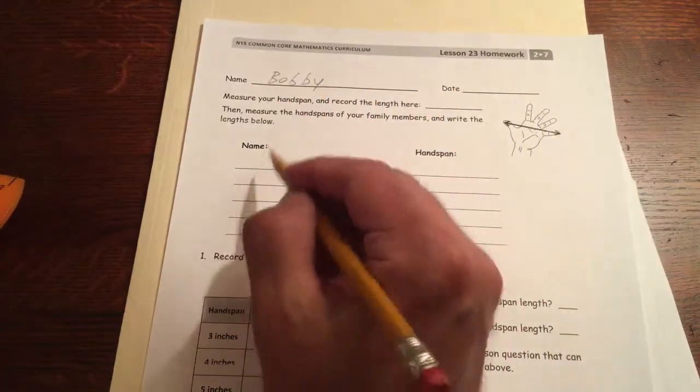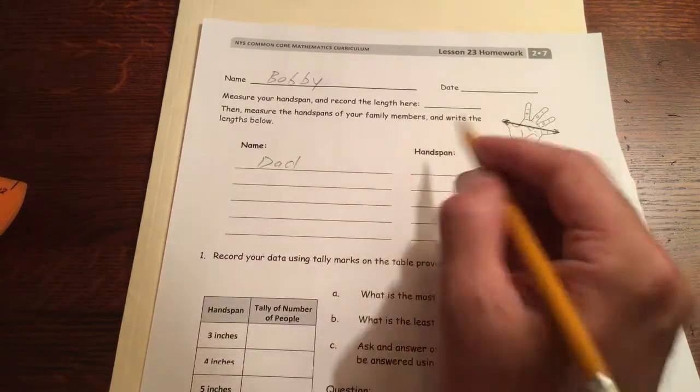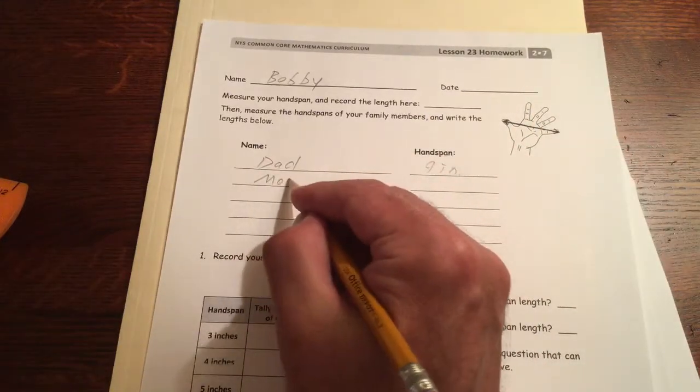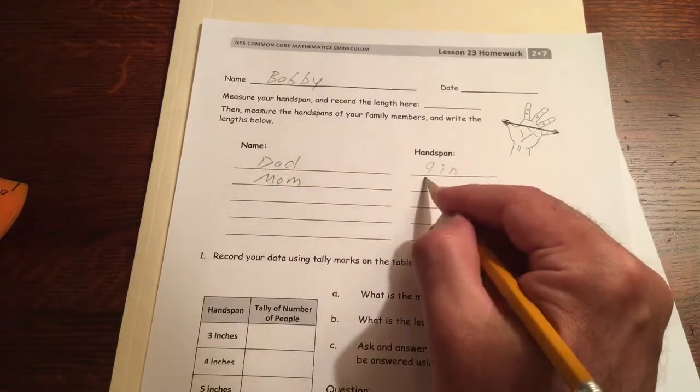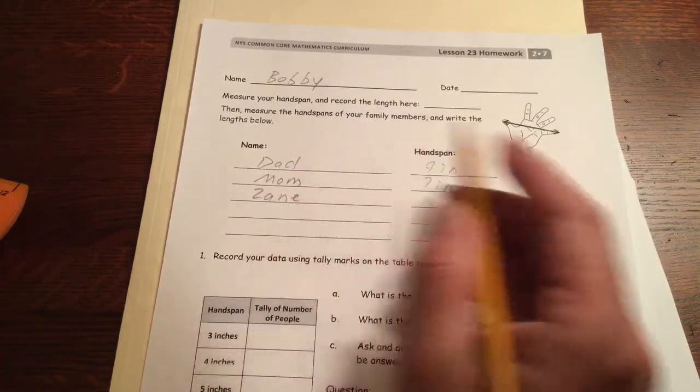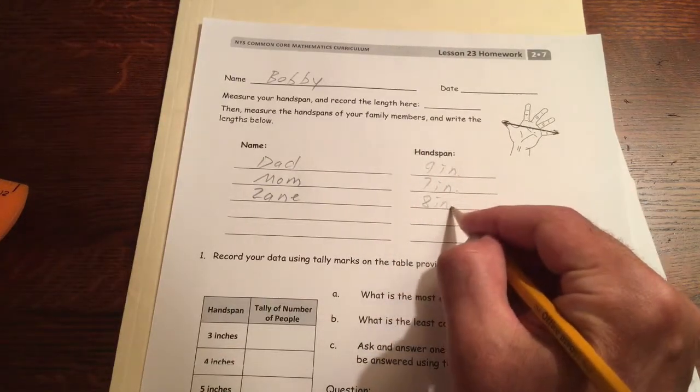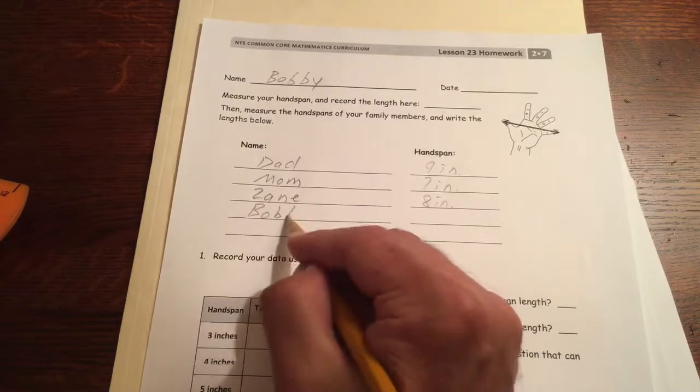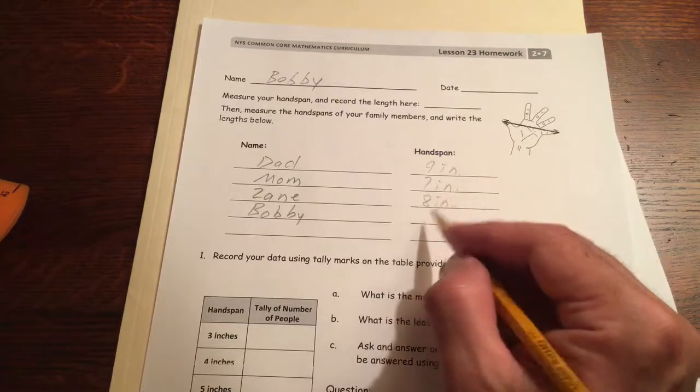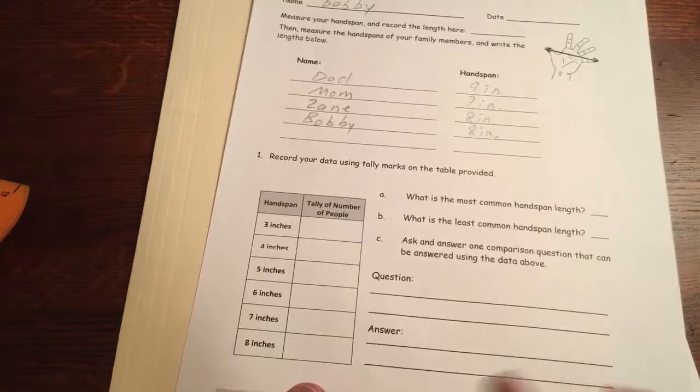So let's say that Bobby's doing this homework. Dad's hand span is nine inches. Mom's hand span was seven inches. Zane's hand span and he was eight. And Bobby. Bobby's hand span was the same as Zane's also eight inches. All right.